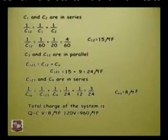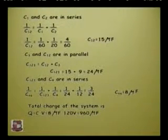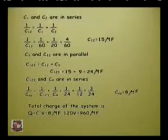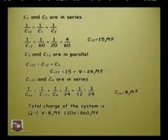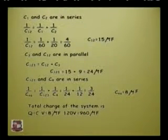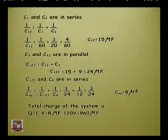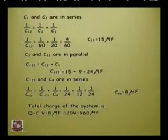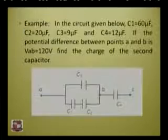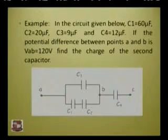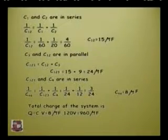Now C123, the equivalent capacitance of C1, C2, C3, is again in series with C4. So 1/C_equivalent = 1/C123 + 1/C4. The total capacitance C_equivalent equals 8 microfarad. The total charge on the system: Q = CV = 8 microfarad × 120 V = 960 microcoulombs.